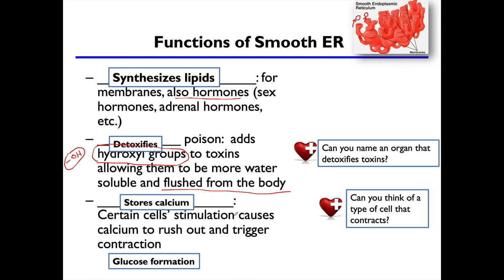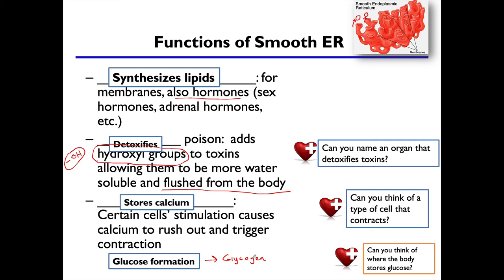Lastly, we can talk about glucose formation. In a couple of places in our body, glucose will ultimately turn into glycogen, which we covered in the biomolecules lecture. When you have a lot of glucose around, you can string it into glycogen for storage in the liver and muscles. That glycogen storage happens in liver cells, which have a lot of smooth endoplasmic reticulum. And yes — the liver is your main detoxifying organ.